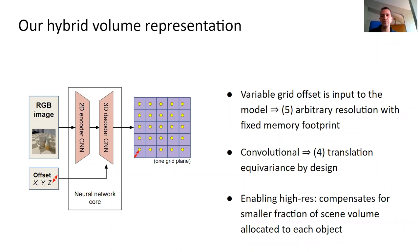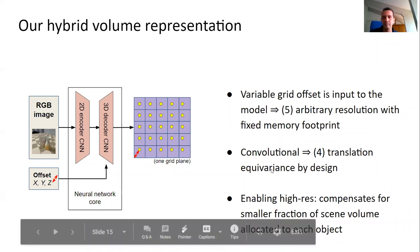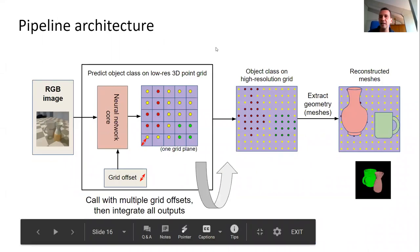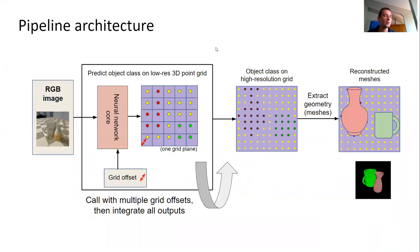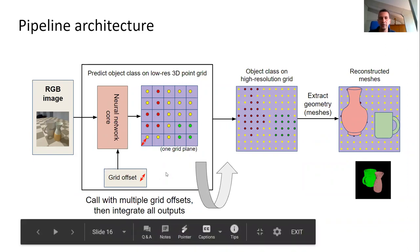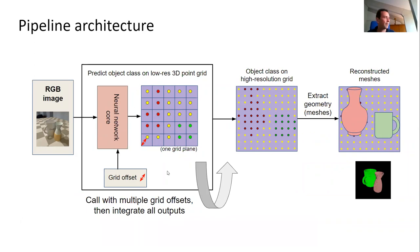One disadvantage: at test time you cannot do just one inference pass to get higher resolution. You call the neural network core once for every grid offset you want. To go from 32-cube to 64-cube, you need to call it eight times — giving the same computational complexity as a higher-resolution voxel model, but with eight times less memory.